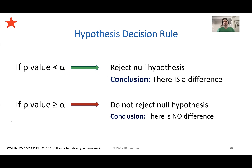If P value is less than your acceptable error rate, there is a difference — the combination is not happening by chance, so you can accept it. If P is greater than or equal to alpha, you don't accept the null but you can't necessarily reject it. This is not saying the null hypothesis is true — you just can't rule it out.